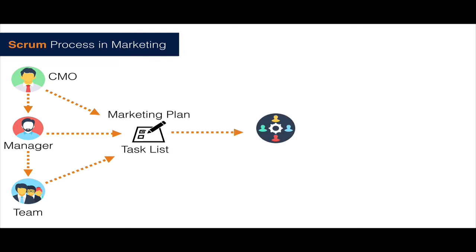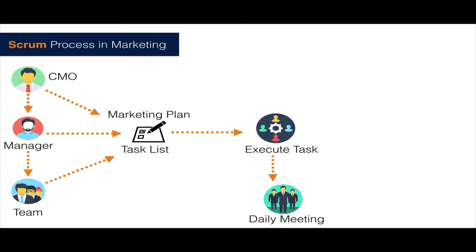The marketing plan is then broken down into tasks, which are executed by the whole team. During that execution phase, they do daily meetings, which is one of the rituals of Scrum. The daily meeting helps the marketing team to adjust and make modifications to the plan and tasks on the fly, so they don't have to wait until the end of the quarter or end of the year to make adjustments that can impact the campaign.